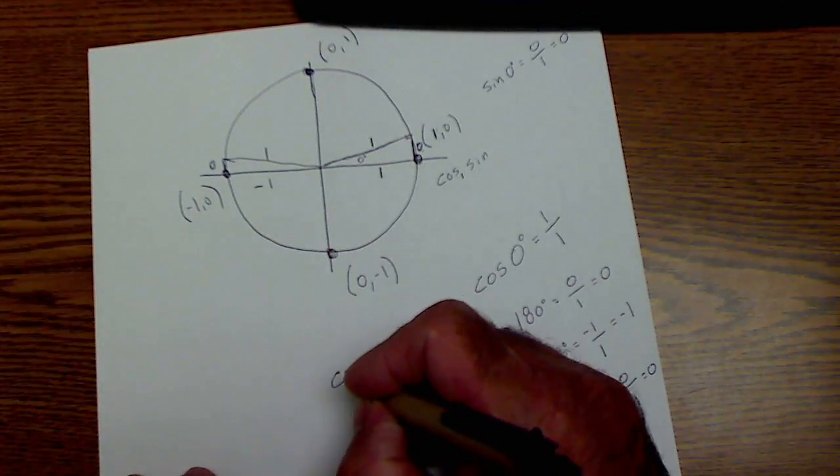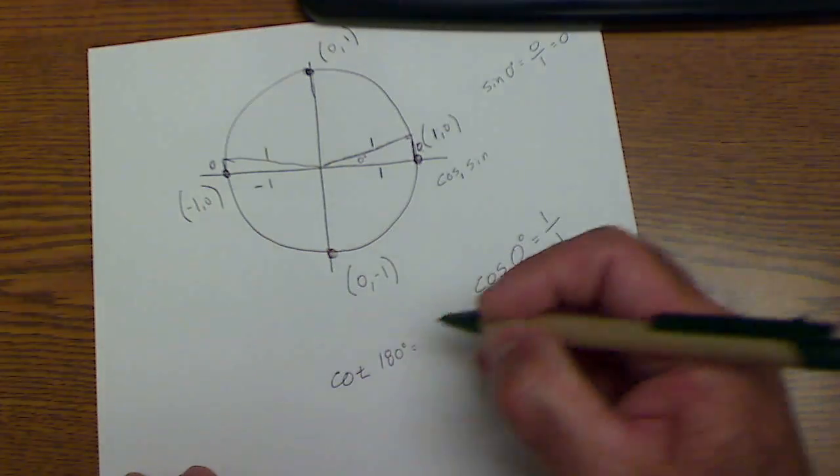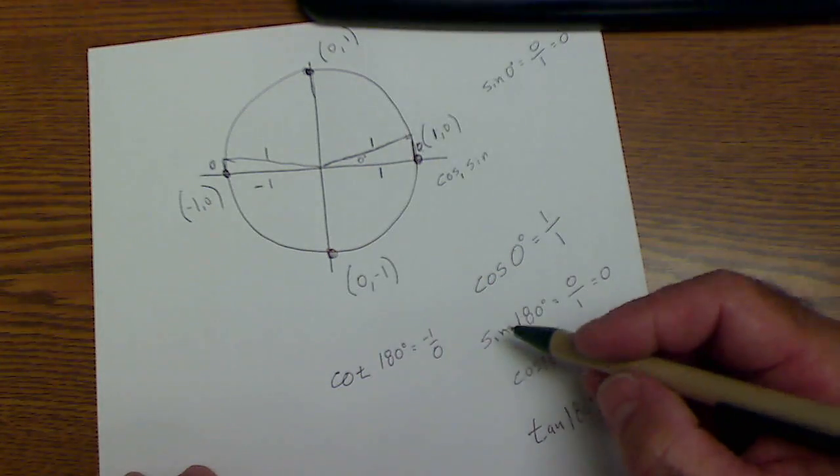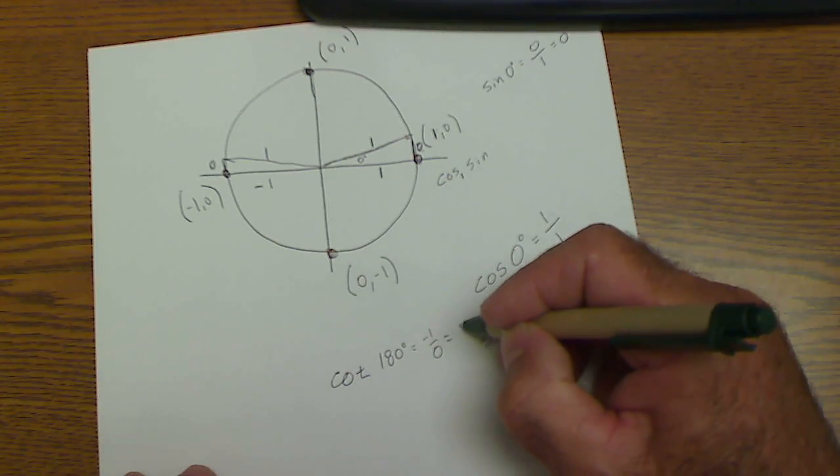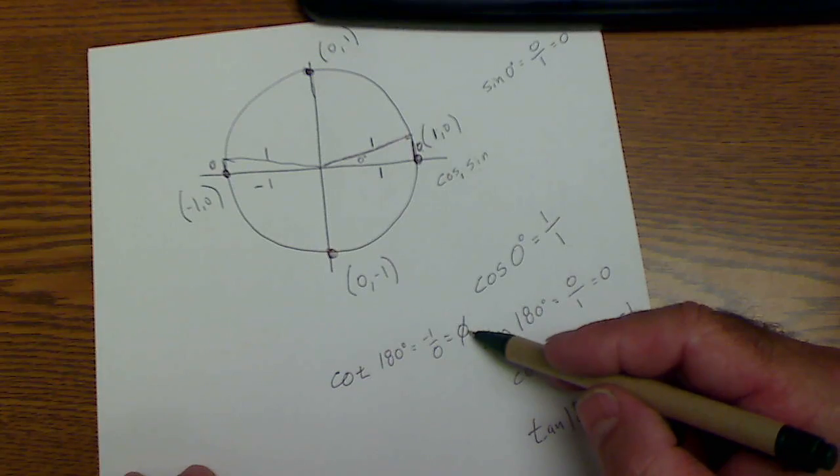Let me do one more here, cotangent of 180 degrees, which is the reciprocal of this, would be negative 1 over 0. Now anytime you divide by 0, you end up with an empty set. So cotangent of 180 would be the empty set.